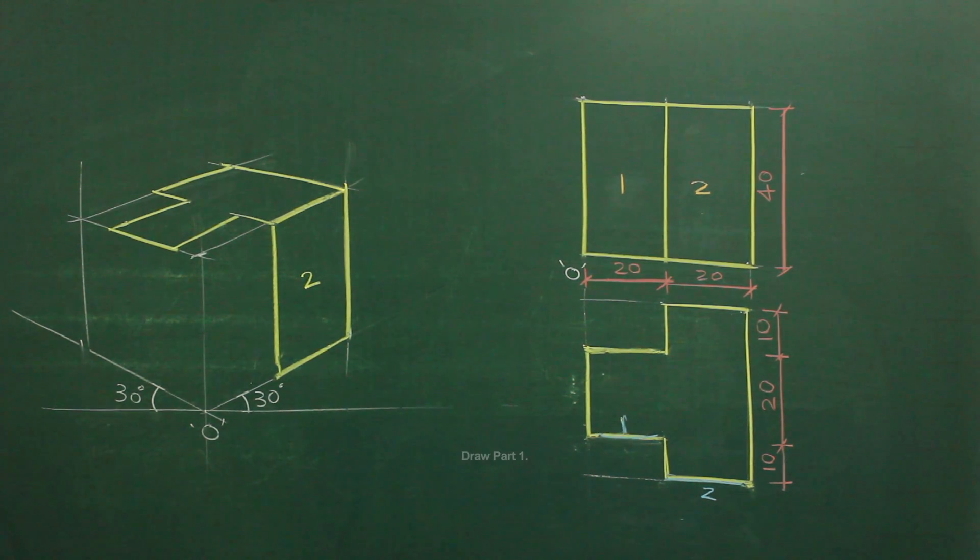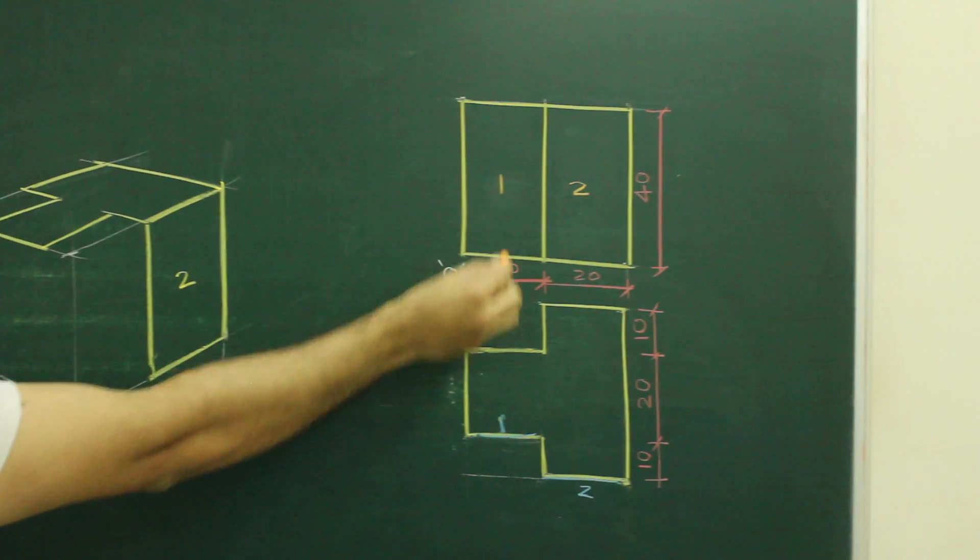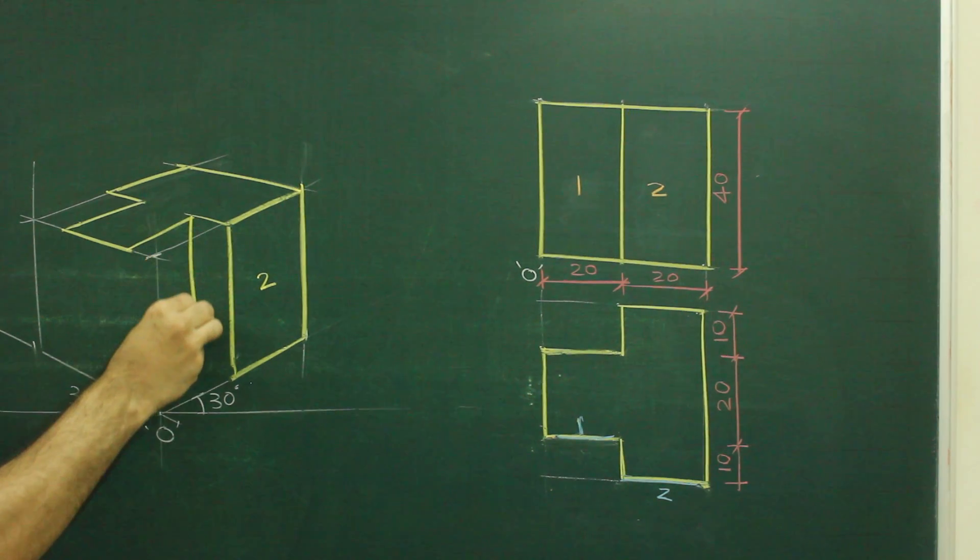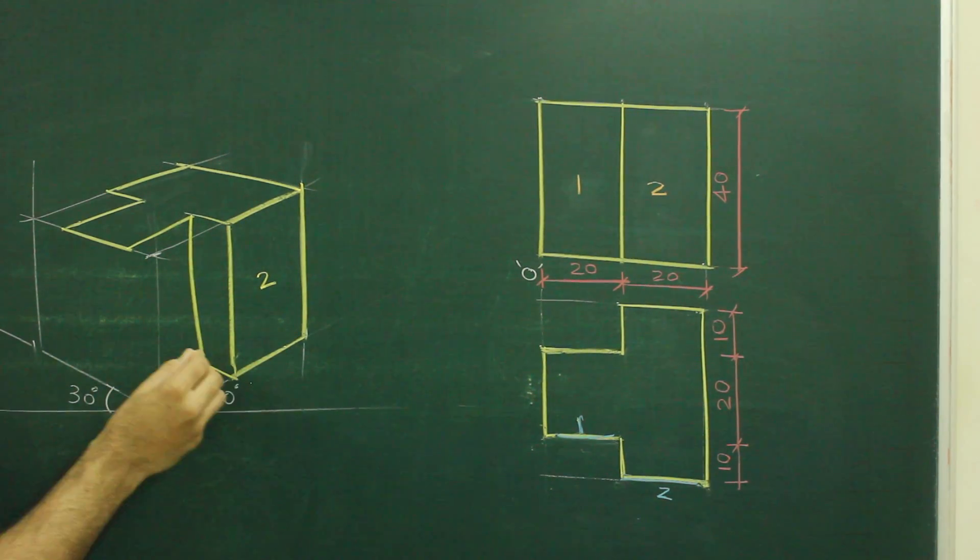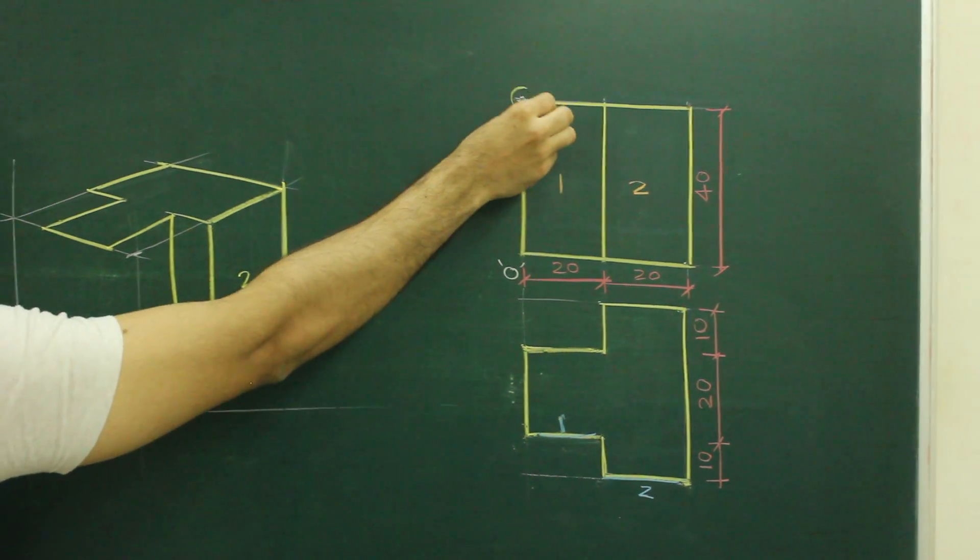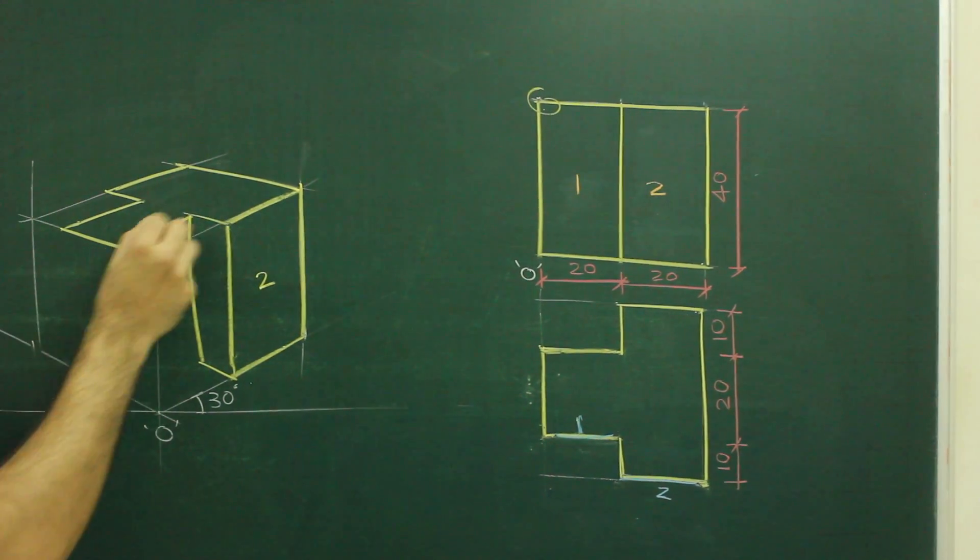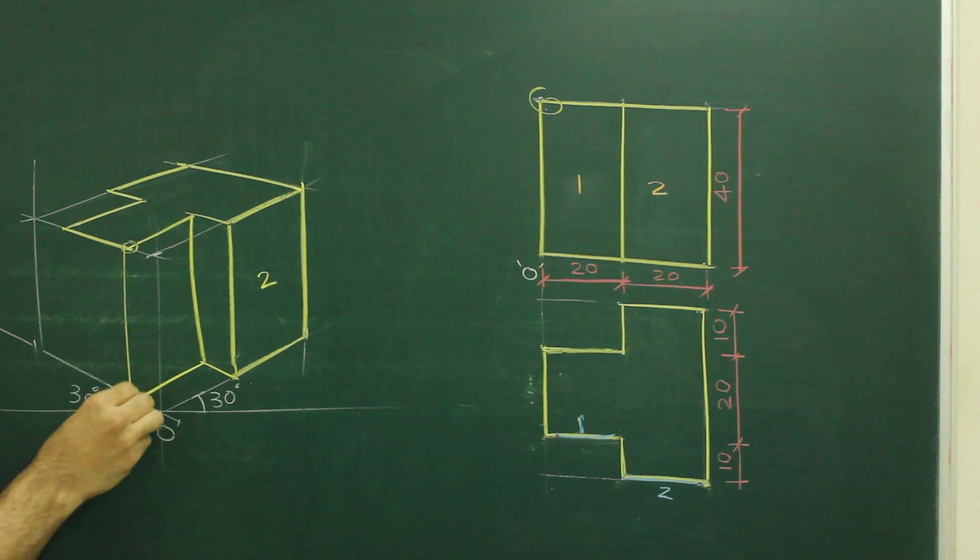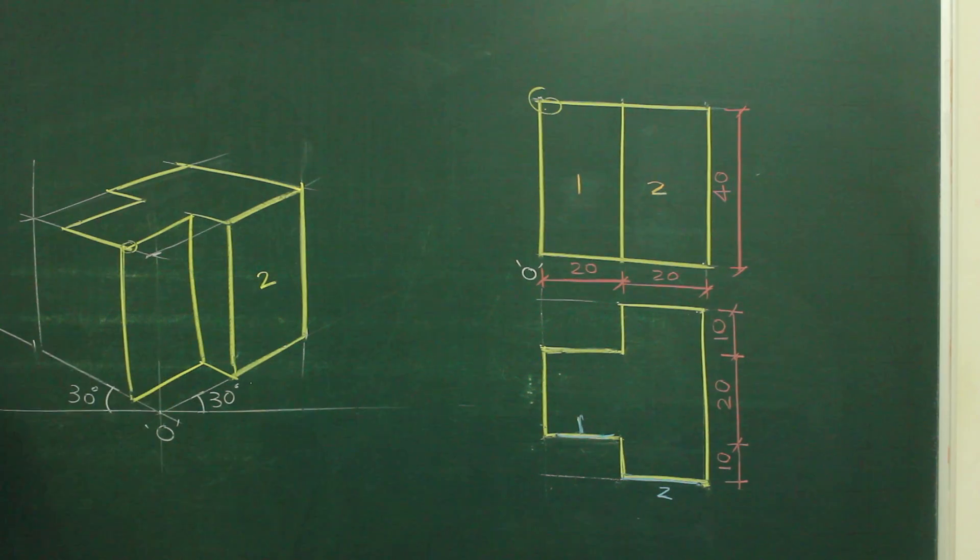Now we need to draw part 1. If you see part 1, which is behind by 10. So from here we go inside by 10, we can draw line 40, and we can join this. Same way, if you see this point in front view, this point is here. How much you have to go down? You have to go down by 40. So you go down by 40 and you join this. So we got part 1 as well.